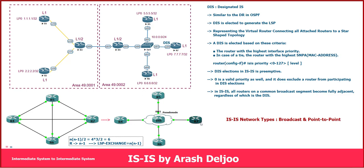This means that as R7 I'm not responsible for advertising my LSPs to all of my neighbors - I only send to the DIS, and the DIS is responsible for advertising to other ISes. The DIS also represents the broadcast segment in the LSDB as a standalone object. In the LSDB of other routers, this broadcast network appears as point-to-point links - four links: R4-to-DIS, R7-to-DIS, R5-to-DIS, and R6-to-DIS.